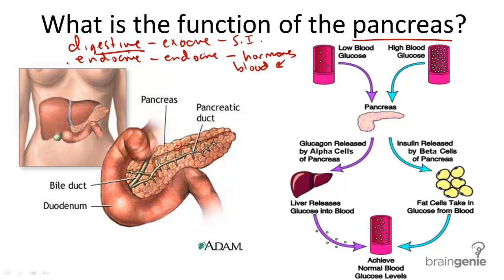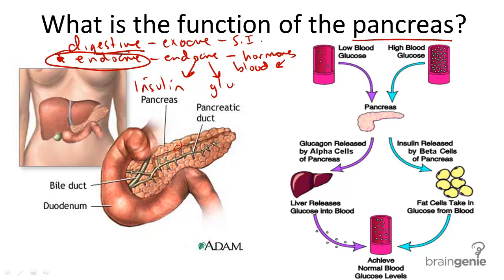Let's focus on the pancreas' role in the endocrine system. This role is to produce two major hormones: one is insulin and the other is glucagon.